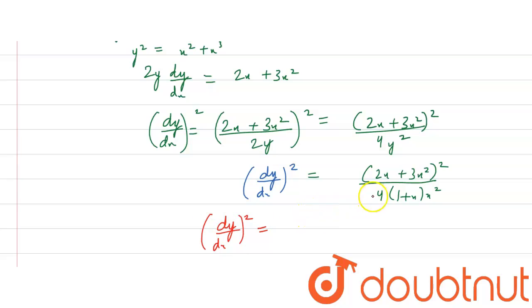If we take x square common outside from here, then we have 2 plus 3x whole square. If we take x common out from here, then we get 2 plus 3x. And as it is of square, as square is above. So, x square upon 4x square into 1 plus x.